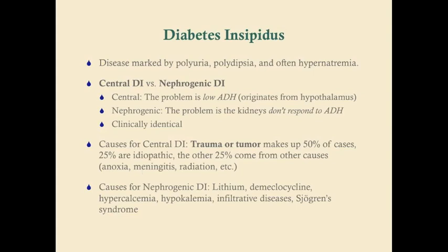Nephrogenic DI is commonly caused by drugs. Lithium, used for bipolar disorder, can cause DI. Demeclocycline can also cause DI — important because demeclocycline is used to treat SIADH, so giving it for a bacterial infection could cause patients not to respond to their ADH. Alcohol is also an ADH inhibitor. Other causes include hypercalcemia, hypokalemia, infiltrative diseases affecting the kidney, and Sjögren's syndrome.